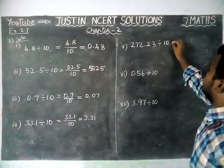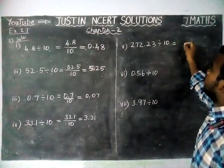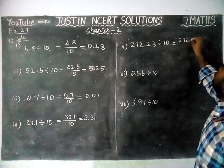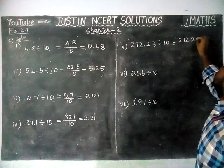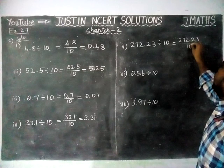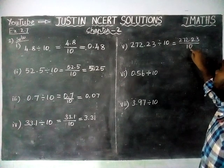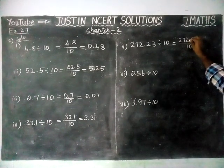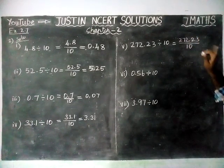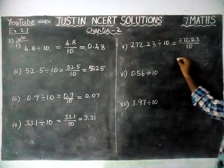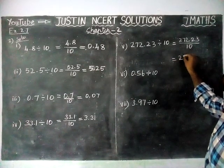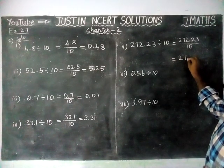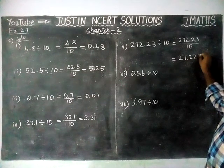Fifth question: 272.23 divided by 10. We are dividing by 10, so there is only one zero — we have to move left hand side one step. So the answer is 27.223.